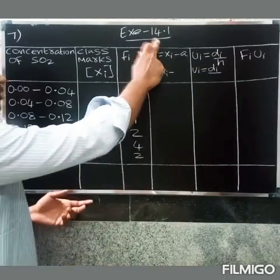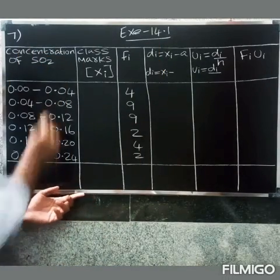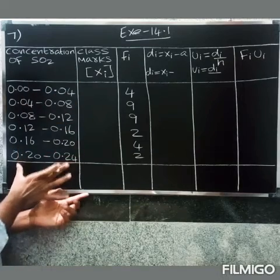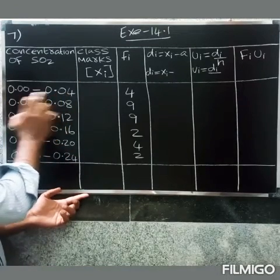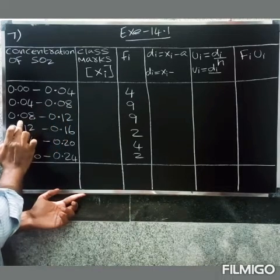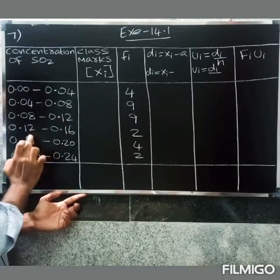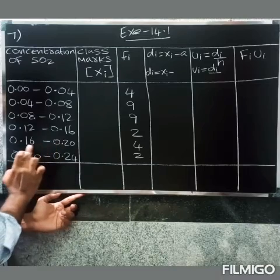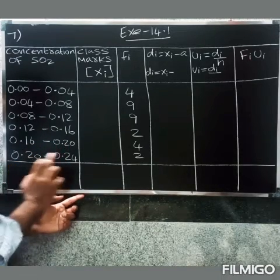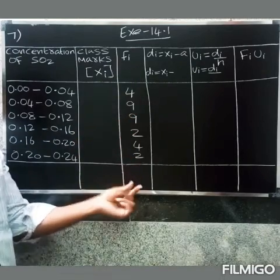Welcome friends. We have XS14.1, 7th question. The data is here — concentration of SO₂: 0 to 0.04, 0.04 to 0.08, 0.08 to 0.12, 0.12 to 0.16, 0.16 to 0.20, 0.20 to 0.24. This is the frequency (F) value.